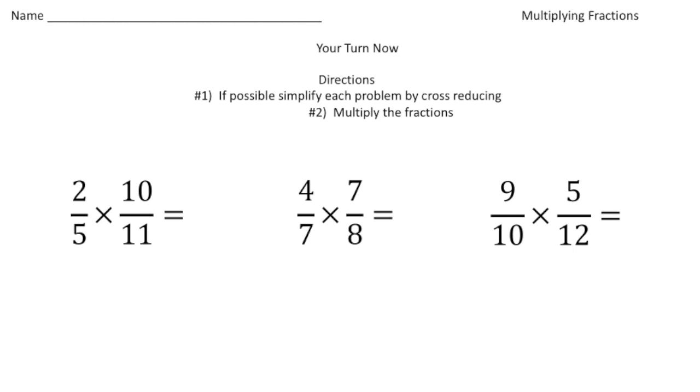Welcome back. Let's see how you did with these practice problems. Step number one, if possible simplify each problem by cross reducing. And two, multiply the fractions. For the first problem, we have 2/5 times 10/11. Notice we can cross reduce the 10 and the 5. The greatest common factor of 10 and 5 is 5.